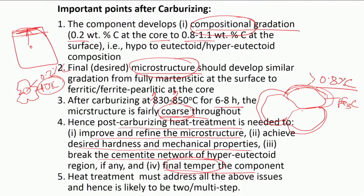For this 1 percent carbon we harden from above the AC1 eutectoid temperature, but for 0.2 percent we harden or normalize from above AC3, which is fairly higher than that. So how do we match these two conflicting situations?